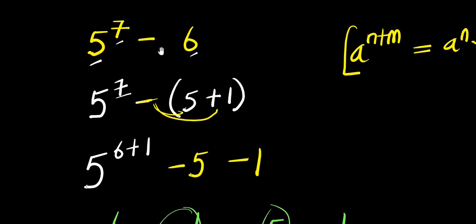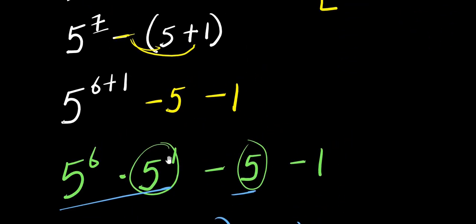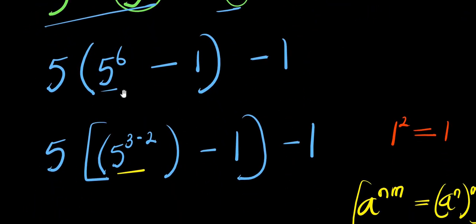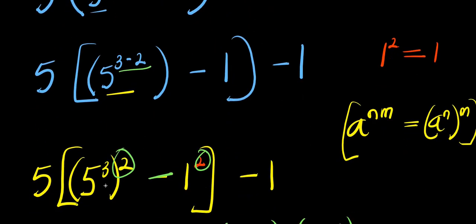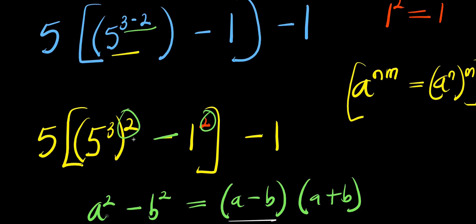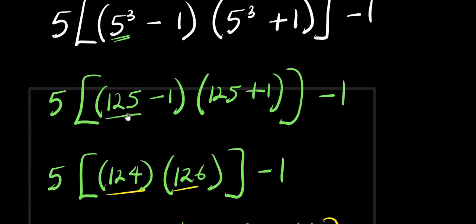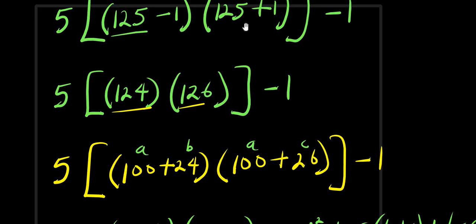From what you have seen so far: first, express 7 as the summation of 6 and 1, and 6 as the summation of 5 and 1. Use the minus to expand, then apply the exponent identity to get 5 power 6 times 5. Factor out the 5 so you have 5 power 6 minus 1. Express 6 in terms of 3 times 2, then express this as 5 power 3 to the power 2, so you can use the difference of two squares. Your a is 5 power 3, b is 1, giving a minus b times a plus b. This leads you to 5 times 124 times 126, subtract 1 and you get the answer.